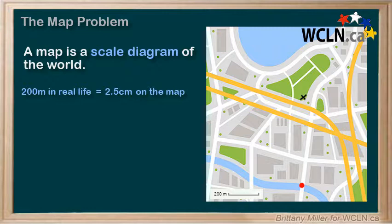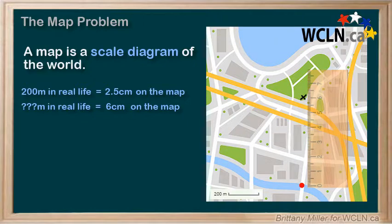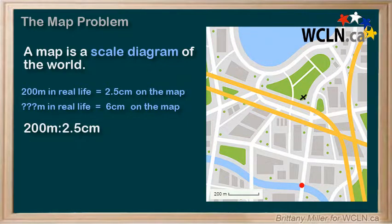We also need to measure the distance from the bridge to the time capsule. Using our ruler again, we get 6 centimeters. So now we know the scale of the map is 200 meters to 2.5 centimeters, and we need to figure out how long 6 centimeters on the map is in real life.